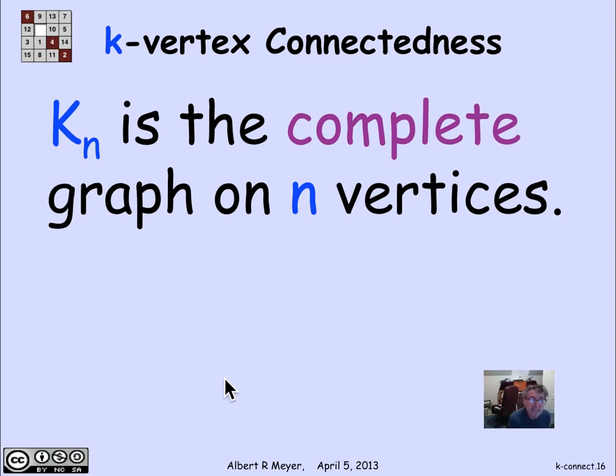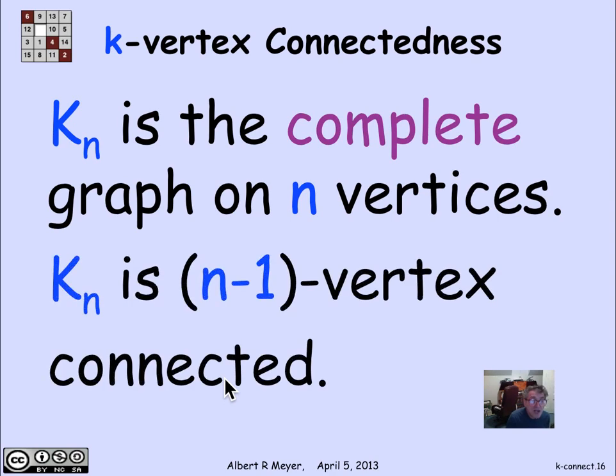The complete graph on n vertices, to cut it up, it requires cutting n minus 1 edges, and in fact n minus 1 vertices to break it up, because everything is connected to everything else. So kn is as connected a graph on n vertices as you can possibly have. But of course, it's got a lot of edges. It's got n choose two edges, or about n times n minus 1 over two edges.